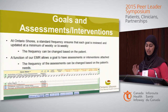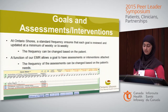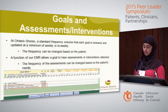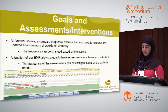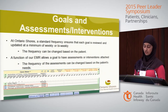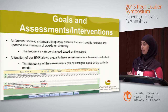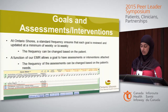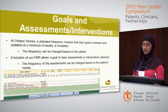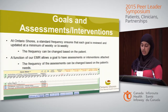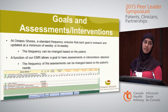The next layer is goals. There is a maximum of two to three goals per theme. As an Ontario Shores standard, each goal should be reviewed and updated weekly or bi-weekly. Because each individual is unique, clinicians have the ability to adjust this based on patient needs and progress. Each goal may also have an attached assessment or intervention, used to track progress, and may have a frequency attached based on patient needs.